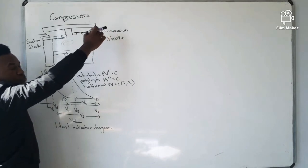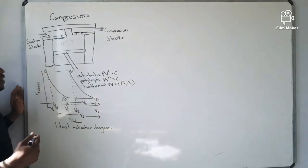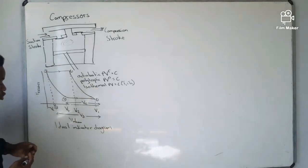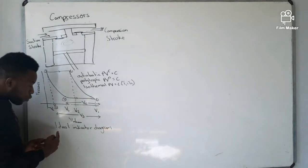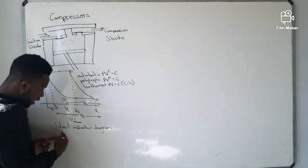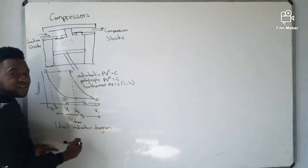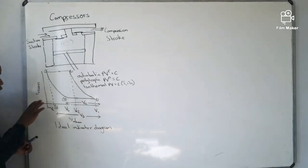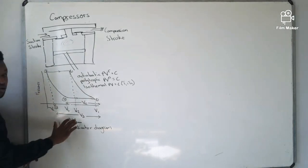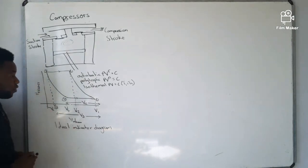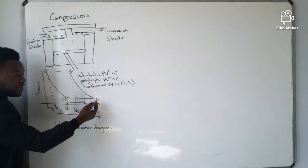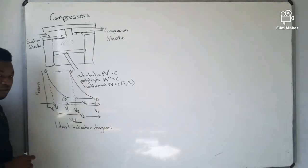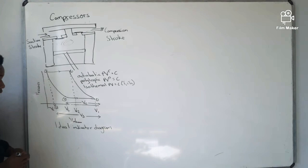When the piston moves back up, that valve closes and the other one opens, which allows the pressure to go out. That is how the single acting compressor works. You should also know about the indicator diagram, which consists of pressure and volume. As you can see, we have different stages - the second stage is taken before the first stage.